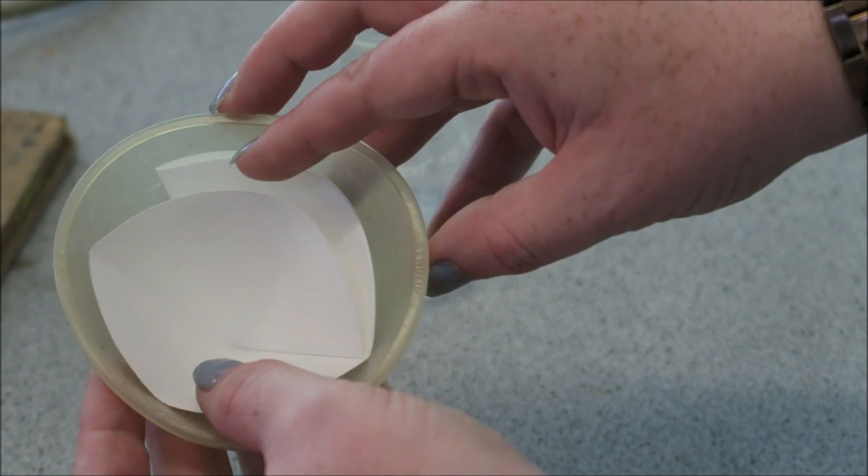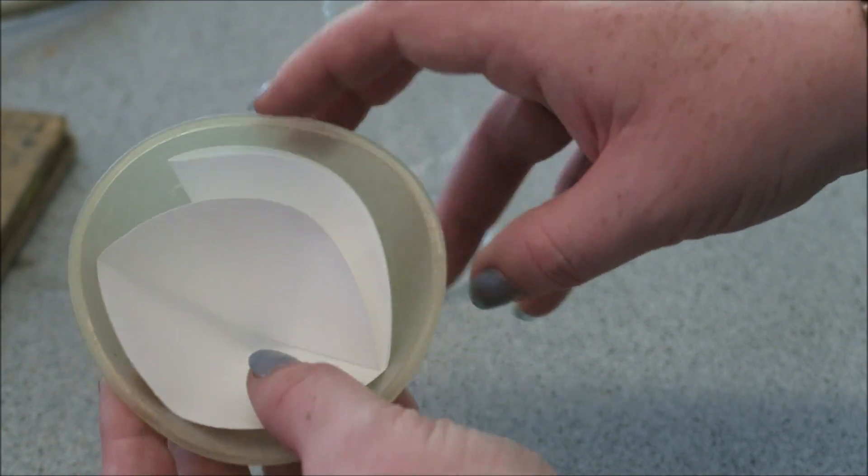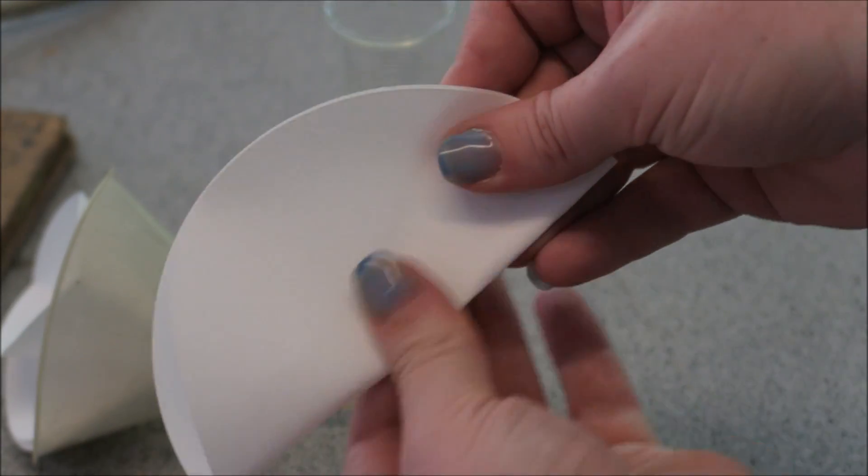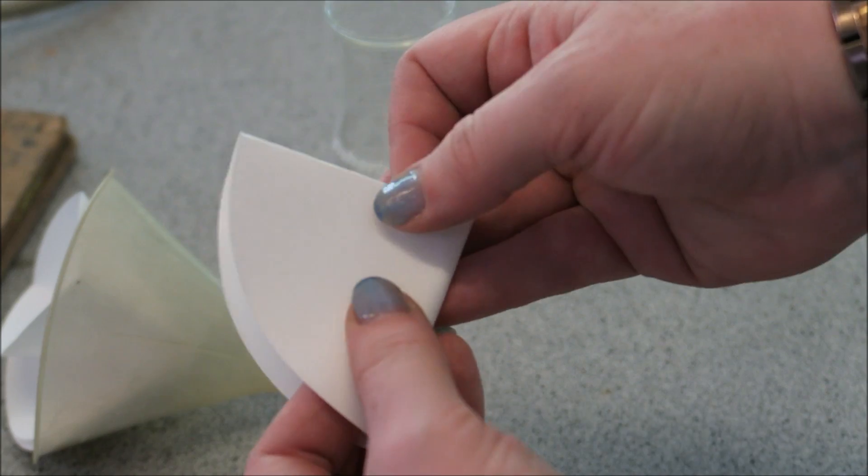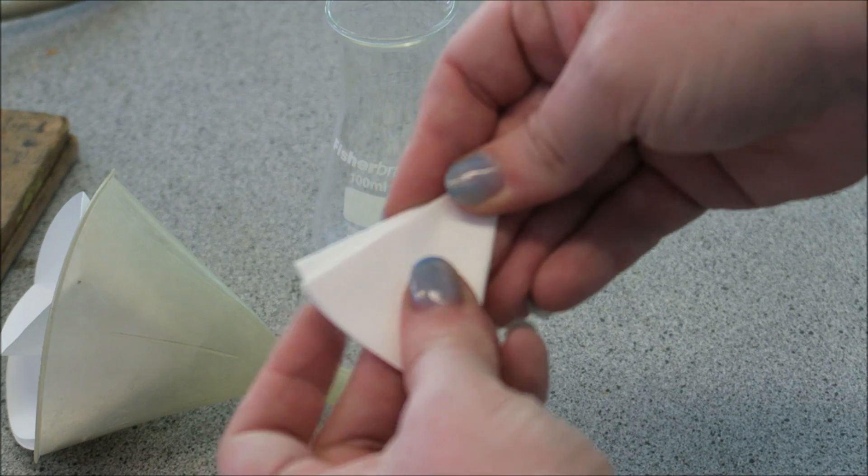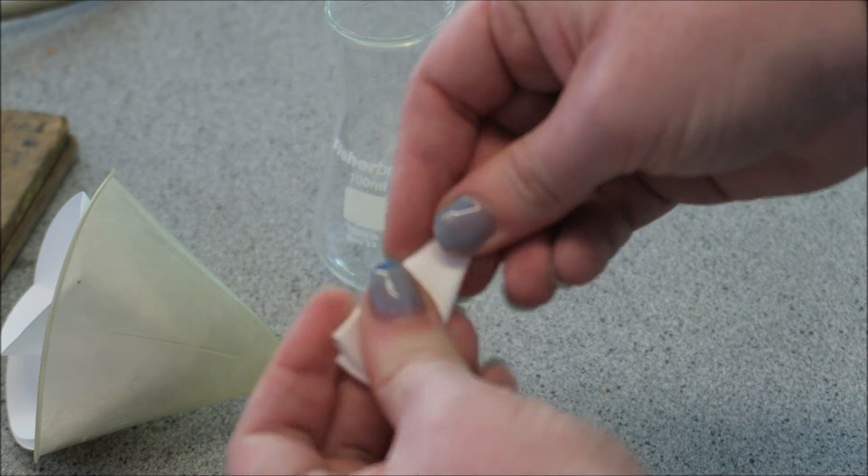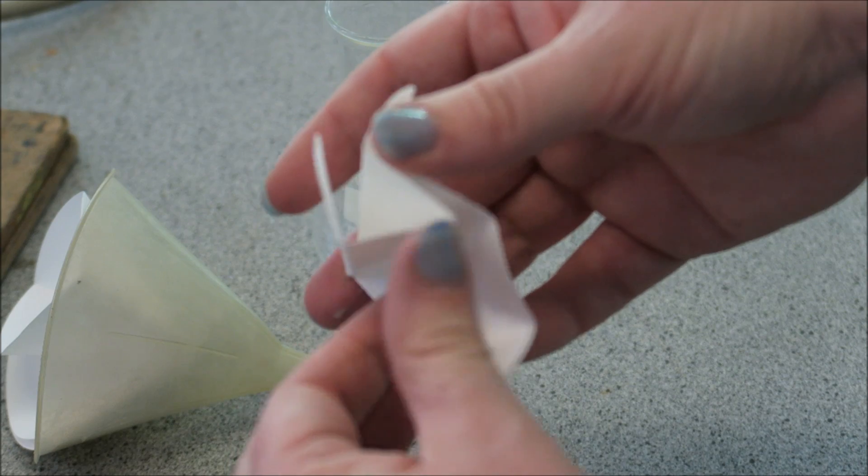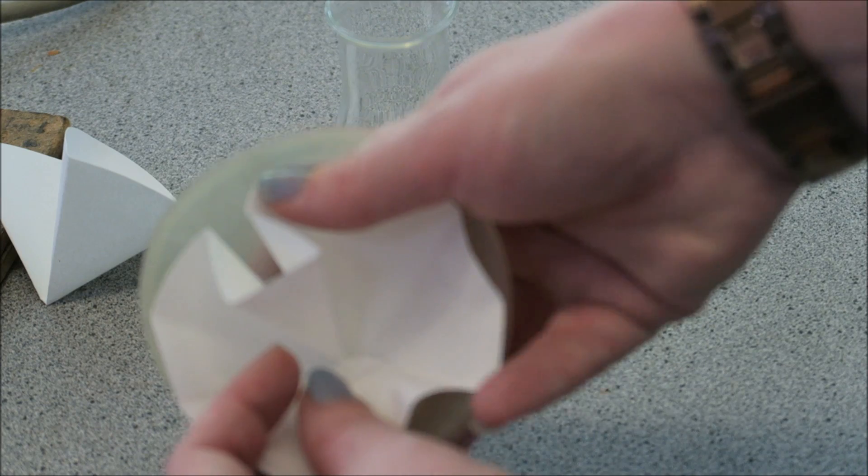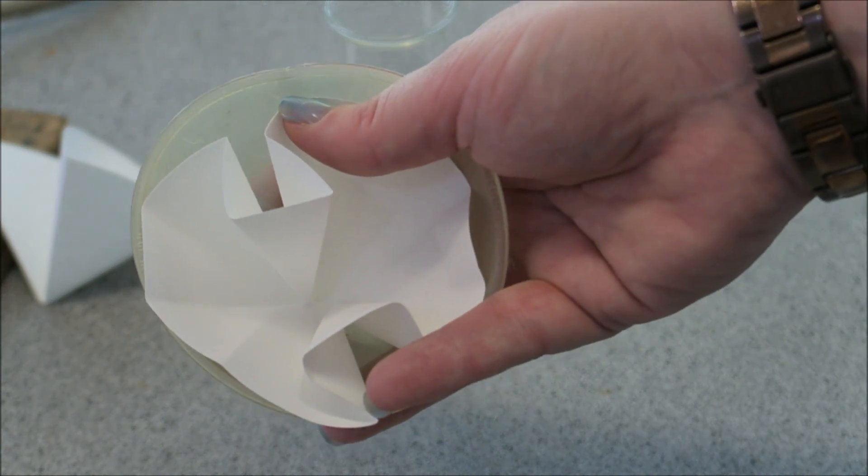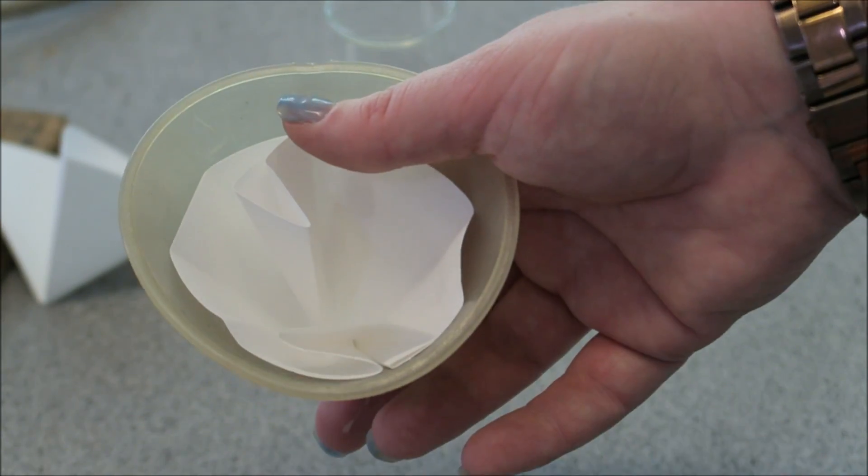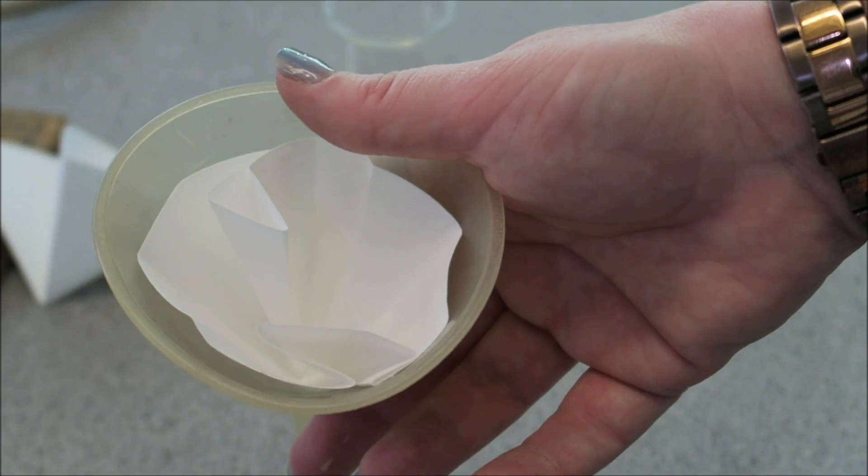Pop that in there and then you've got your filter. The other way you can do it is getting your piece of filter paper, folding it in half, in half again, in half again and in half again, separating that all out and then putting that in your funnel. The advantage of doing it this way is that there's not going to be a massive chunk of paper for stuff to filter through, so this is actually going to happen faster.